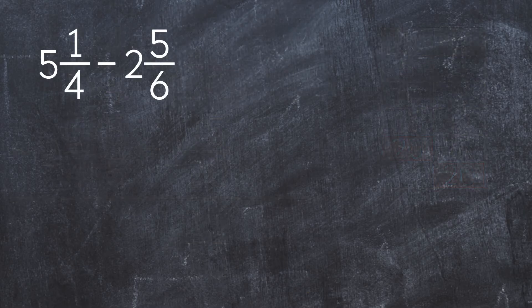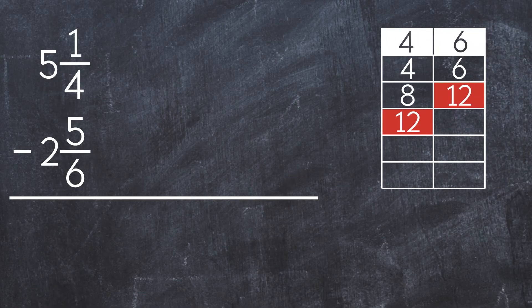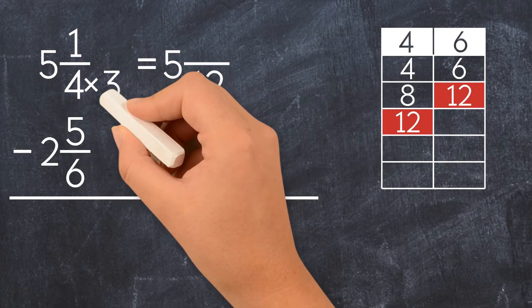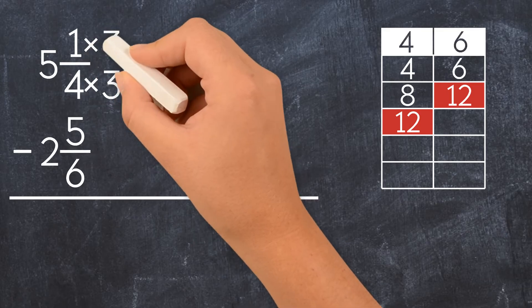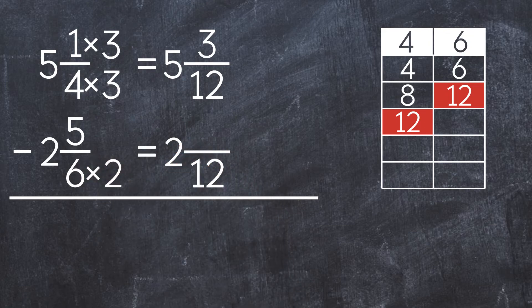Let's do another example: 5 and 1 fourth minus 2 and 5 sixths. Let's set this problem vertically. The common denominator between 4 and 6 is 12. To get 12 in the denominator, we multiply 4 times 3. We also multiply the numerator by 3, to get 5 and 3 twelfths. For the second mixed number, we multiply 6 times 2, and also multiply the numerator by 2, to get 2 and 10 twelfths.